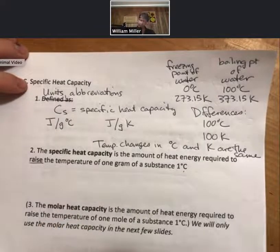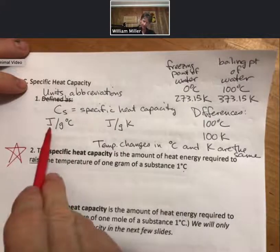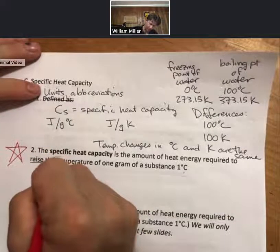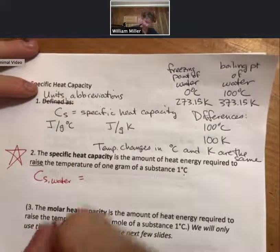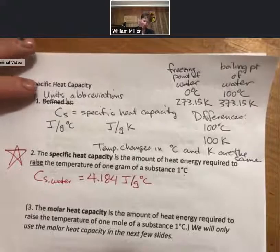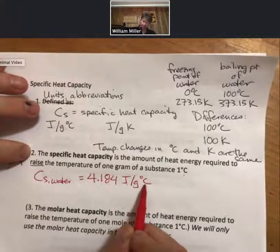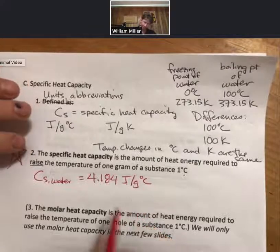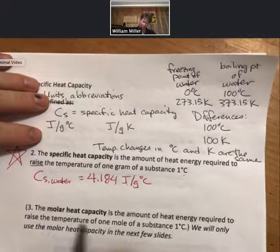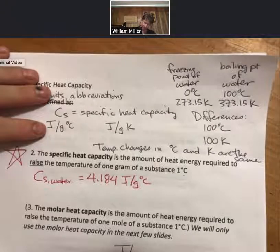Typically we talk about specific heat capacity in joules per gram degree Celsius. For example, the specific heat of water is 4.184 joules per gram degree Celsius. That means it takes 4.184 joules to raise the temperature of 1 gram by 1 degree Celsius. For the next few slides, we'll also talk about the molar heat capacity: the amount of heat energy required to raise the temperature of 1 mole of a substance by 1 degree Celsius, with units of joules per mole degree Celsius.